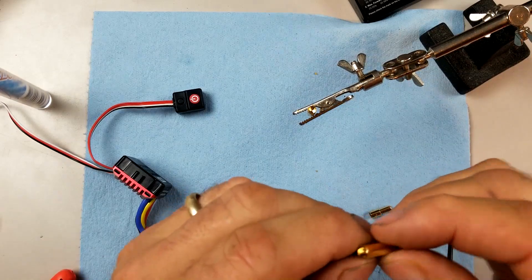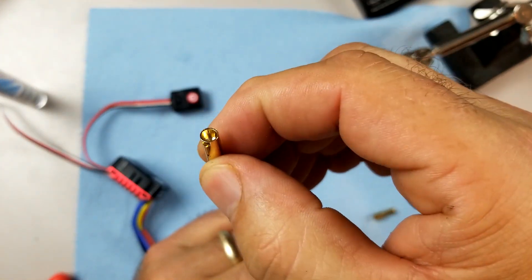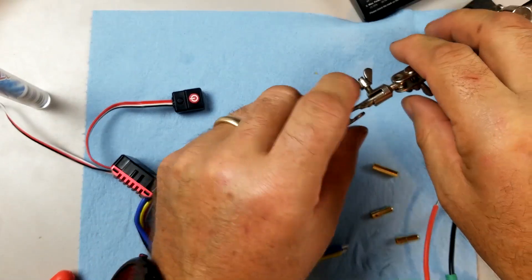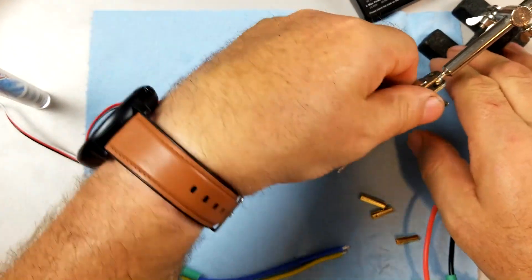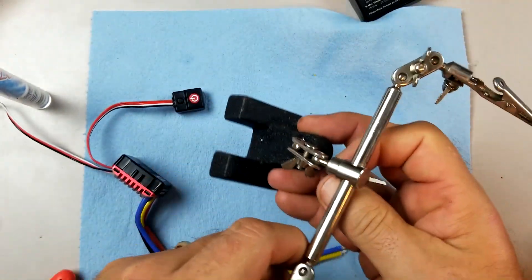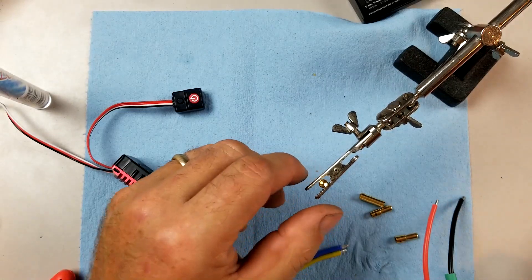So first thing you do is you fill up the little cup with solder. I already got one on my handy arm here. I've used this for years. They're pretty cheap. I use these for soldering all the time.